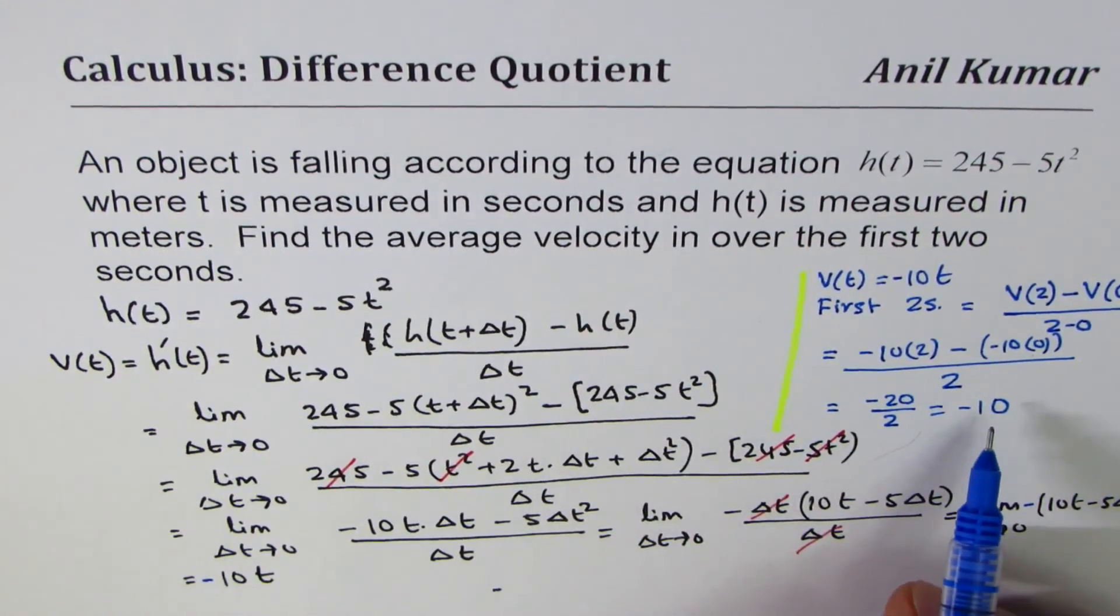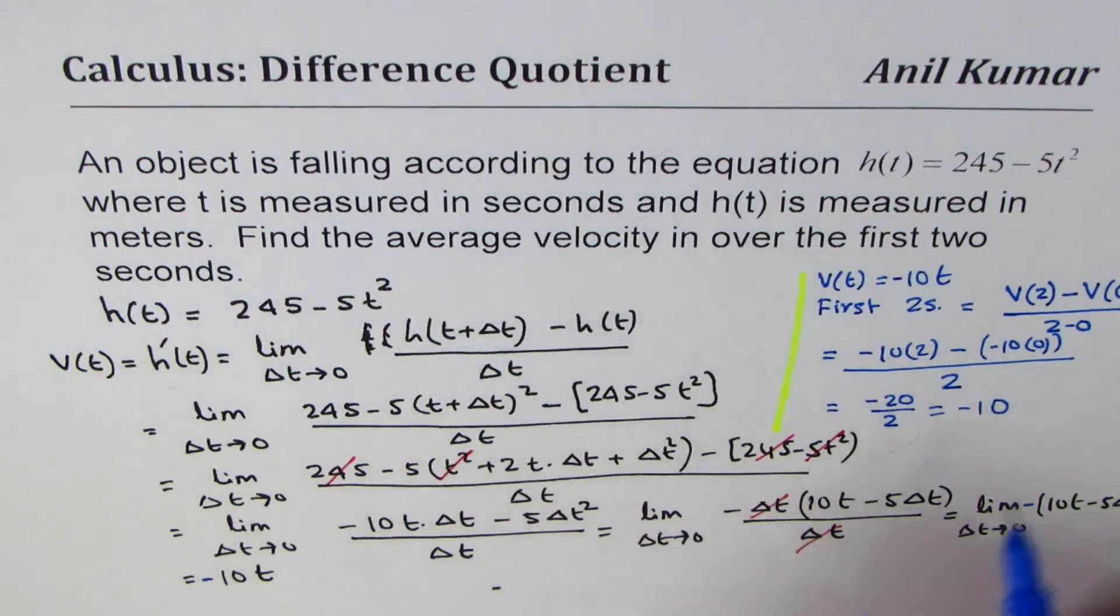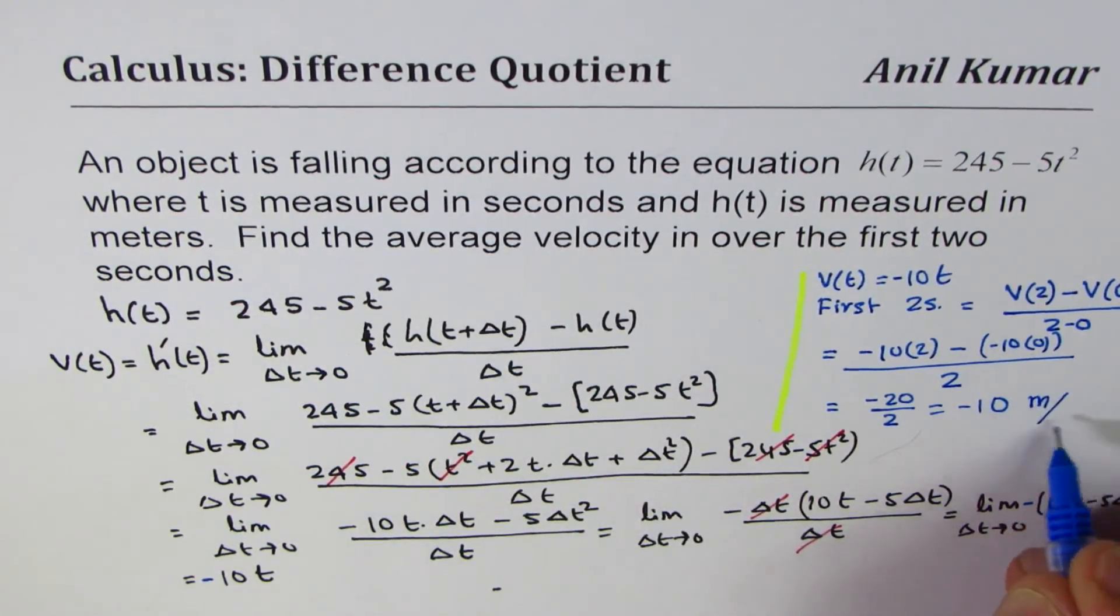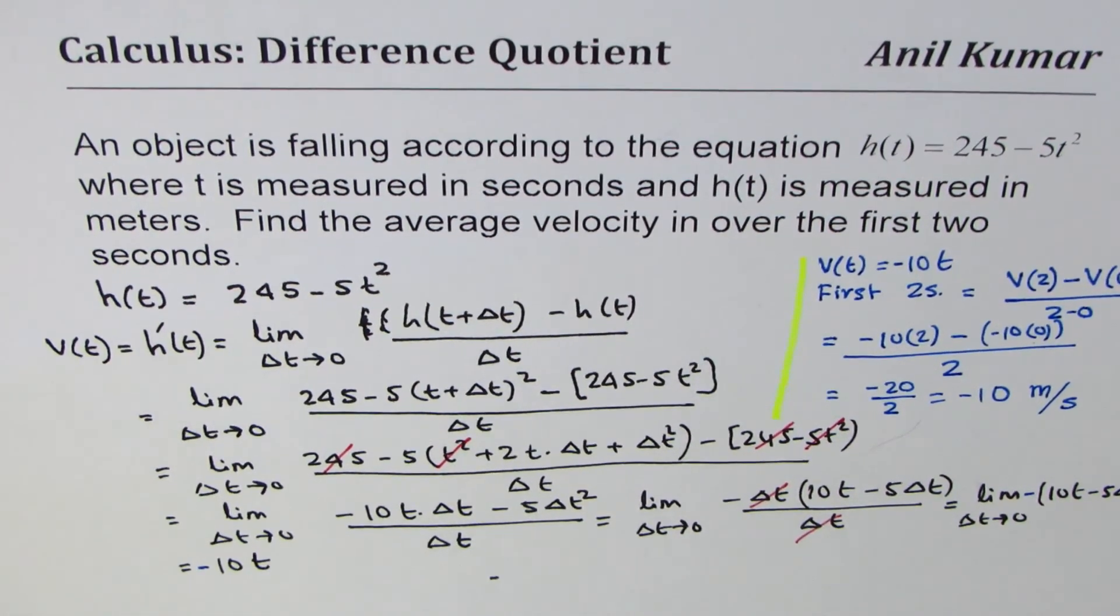And the unit should be meters per second. Meters is the height, and time is in seconds. So that is so much meters per second. So average velocity is -10 meters per second for the first 2 seconds. And that is how you are going to solve it.